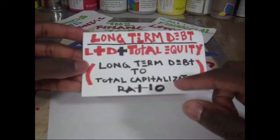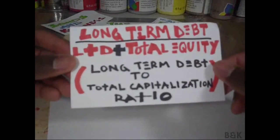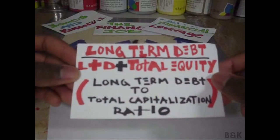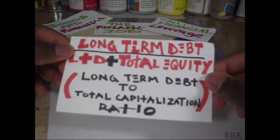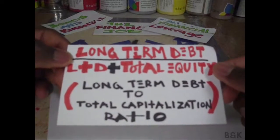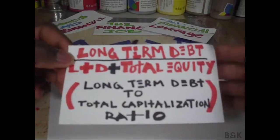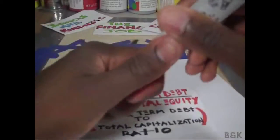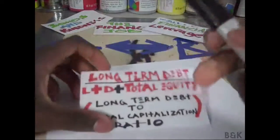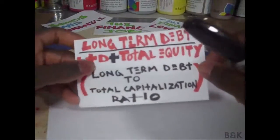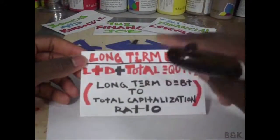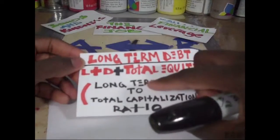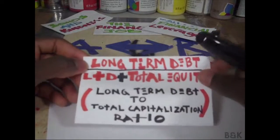For the sake of cutting no corners, let's go over it. Long-term debt is something you'll find on your balance sheet — any amount of money due over a year. Let's make up some numbers so we can get this one out of the way, because I feel the next ratio is more natural.